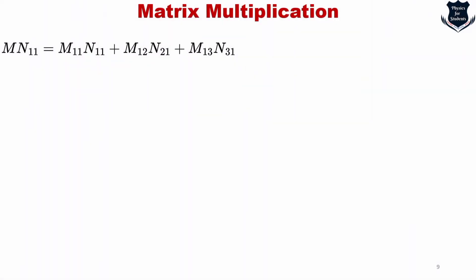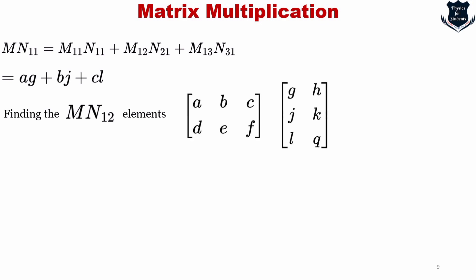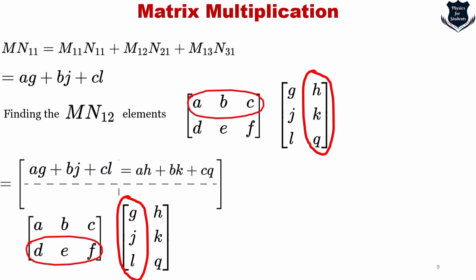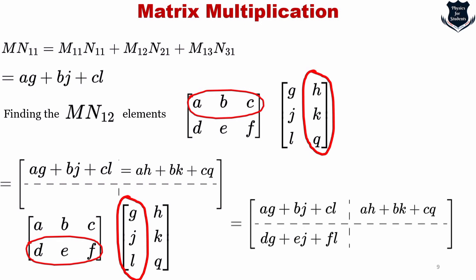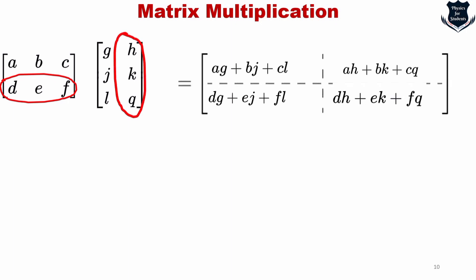Next we find element (M·N) sub 1,2 by taking the same row A, B, C and computing with the second column H, K, Q, giving A·H plus B·Q plus C·K. Then for element (M·N) sub 2,1, we use row D, E, F and get D·G plus E·J plus F·L. Finally, element (M·N) sub 2,2 uses row D, E, F with the second column, completing the 2×2 result matrix. This is how matrix multiplication operates element by element.